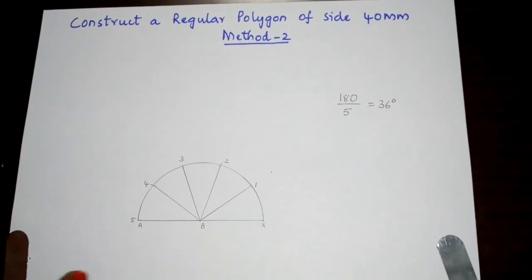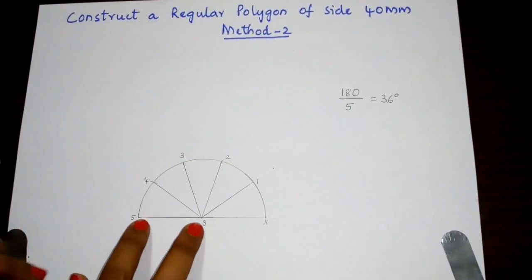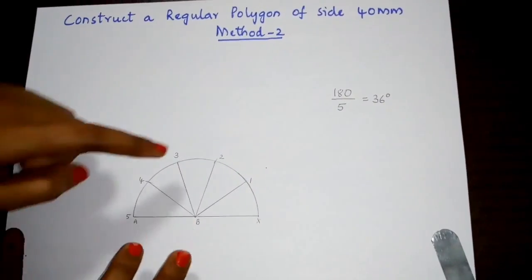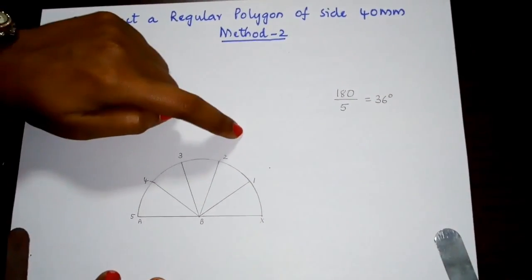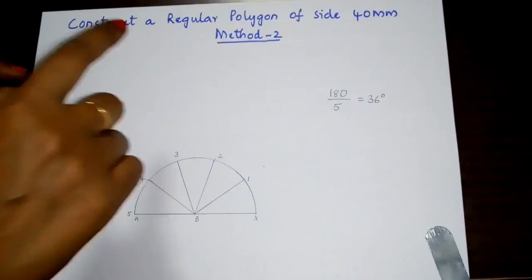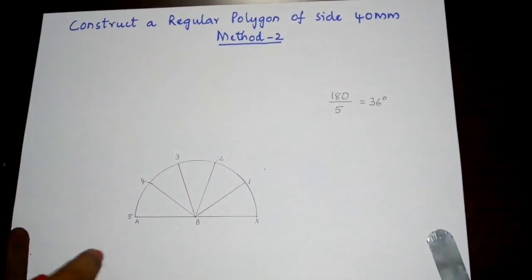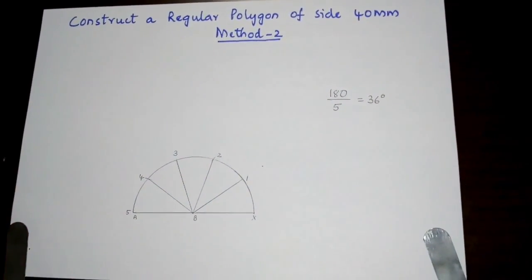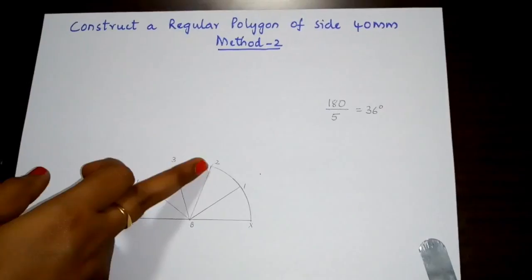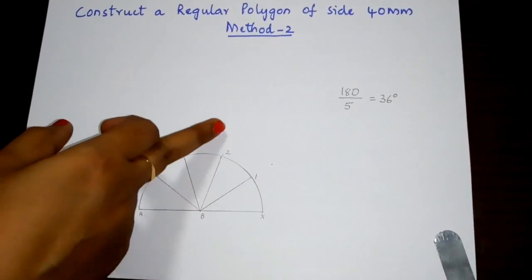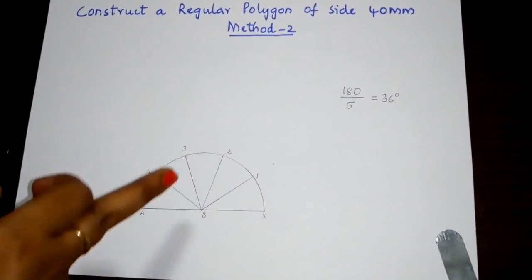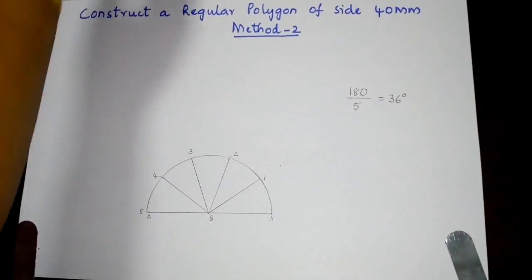For any polygon, the first drawn line will be the first base and the second line will be the second base. We have to draw the other sides. So whatever the polygon—for example, if it is a hexagon or septagon—you have to consider the second line as the second base.